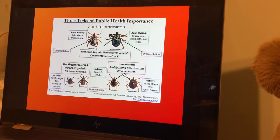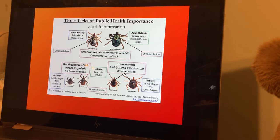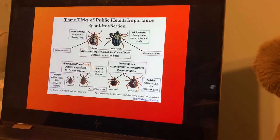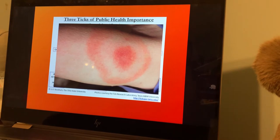Sorry if this creeps some of you guys out, but we've got deer ticks, which are small. Then sometimes we see lone star ticks, and the most standard one you'll see is the American dog tick. These things hang out on tall grasses, usually along trails and in fields. The only reason I bring this up is because some of them carry Lyme's disease, which is a terrible infection. Here's the standard bullseye rash — if you end up with one of these, you can get Lyme's disease.